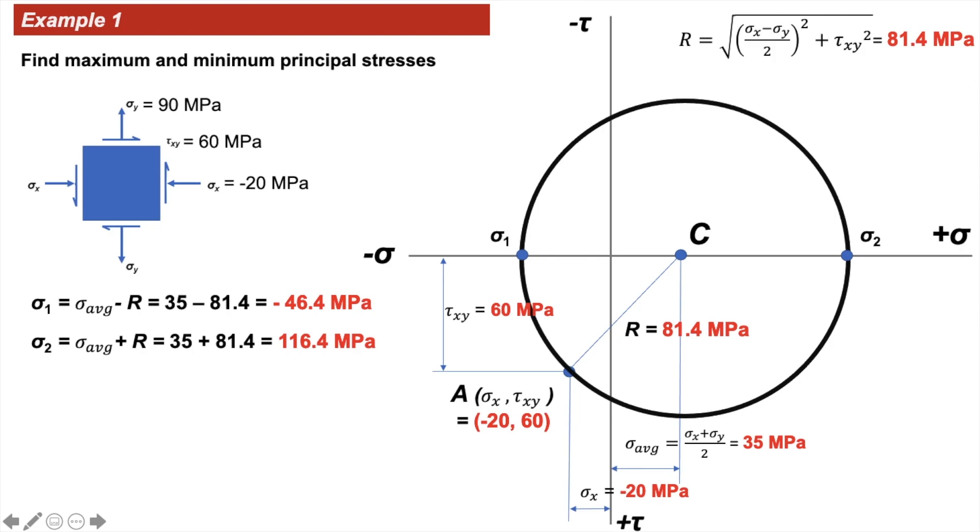Sigma 1 is sigma average minus R, which is minus 46.4 MPa, and sigma 2 is sigma average plus R, which is 116.4 MPa. Tau x prime y prime is 0 because in the state of maximum and minimum principal stresses, the shear stresses are zero.